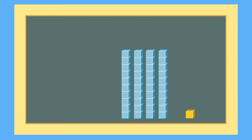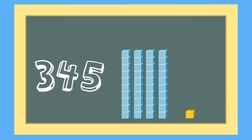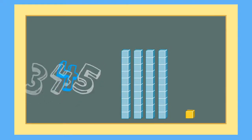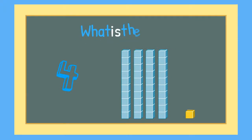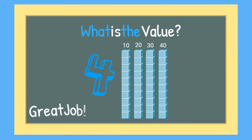In our number 345, there are 4 groups of 10. What is the value of 4 groups of 10? Can you help me count them to find out? 10, 20, 30, 40. Great job!